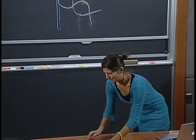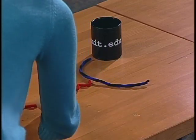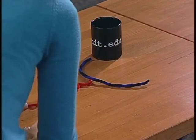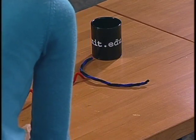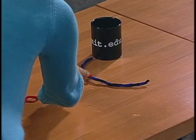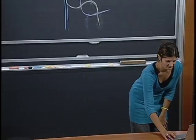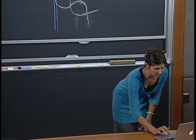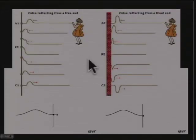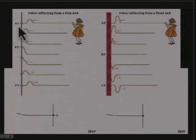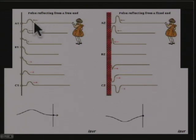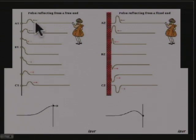Here we can see an example. This represents the first surface. Here we have an incoming wave, and when it is reflected at the first surface, it changes phase. We can look at this also when considering a pulse transmitted on a spring or a long rope. If the end is free to move, then when the pulse is coming and gets reflected, it doesn't change phase - the incoming and outgoing pulse have the same phase.